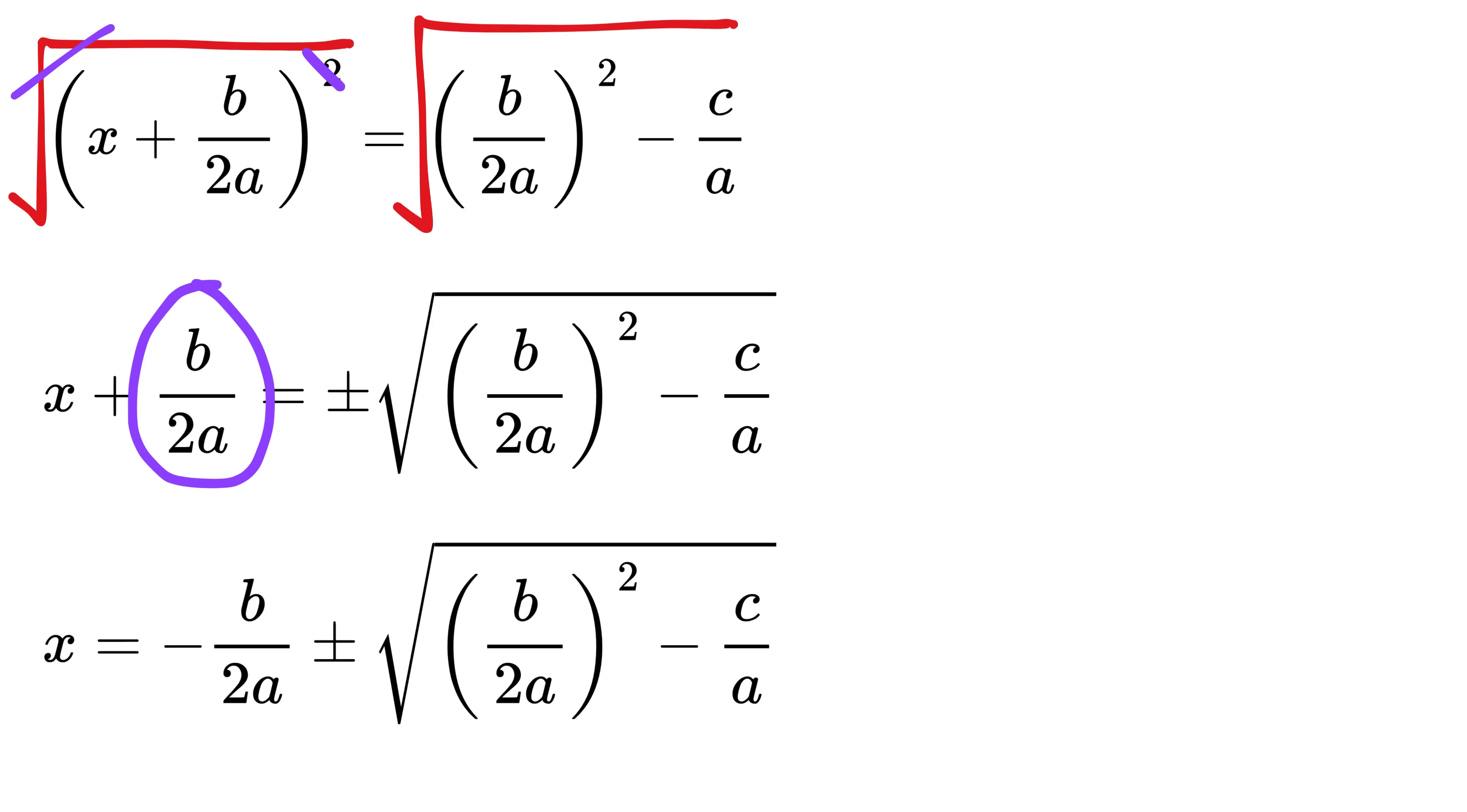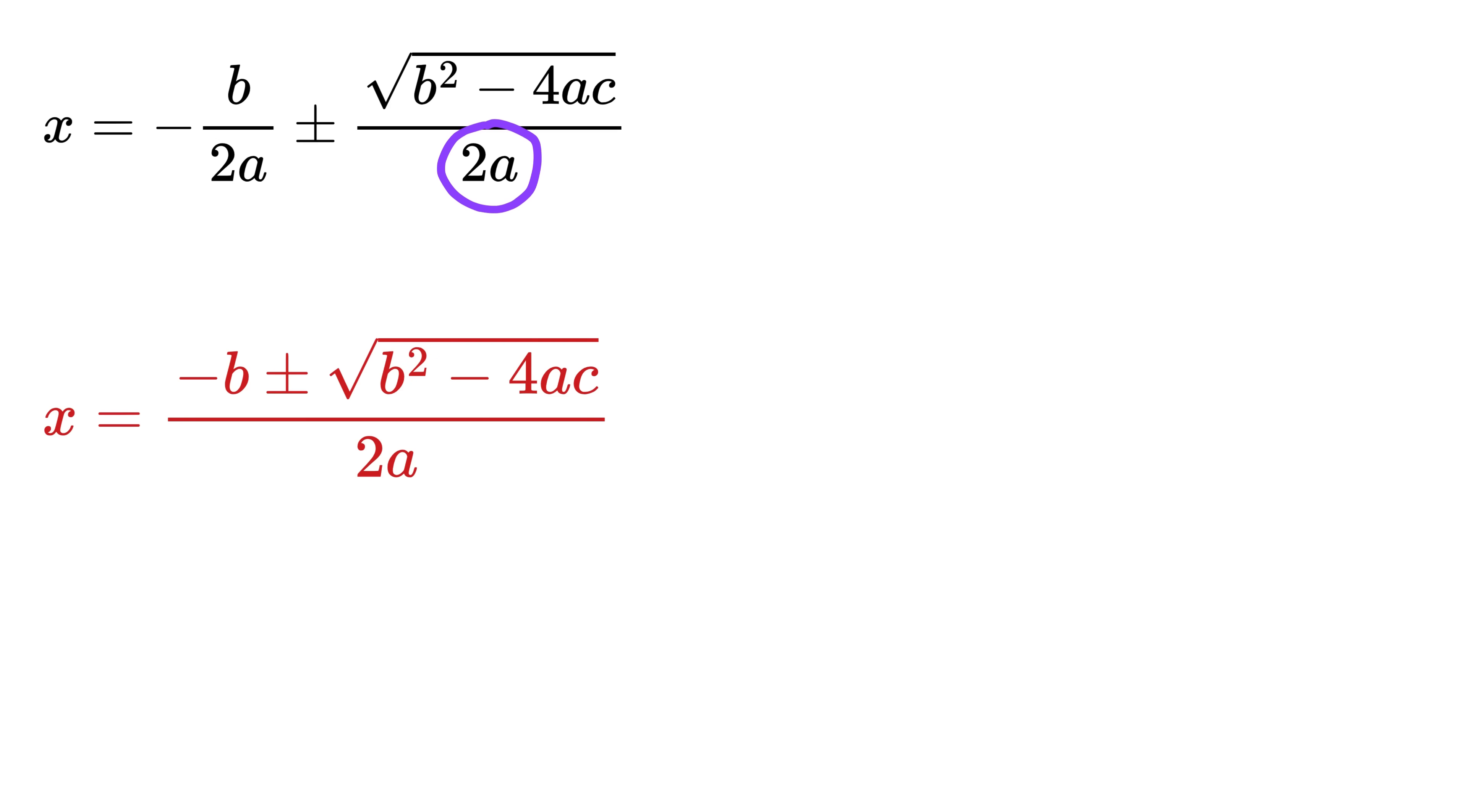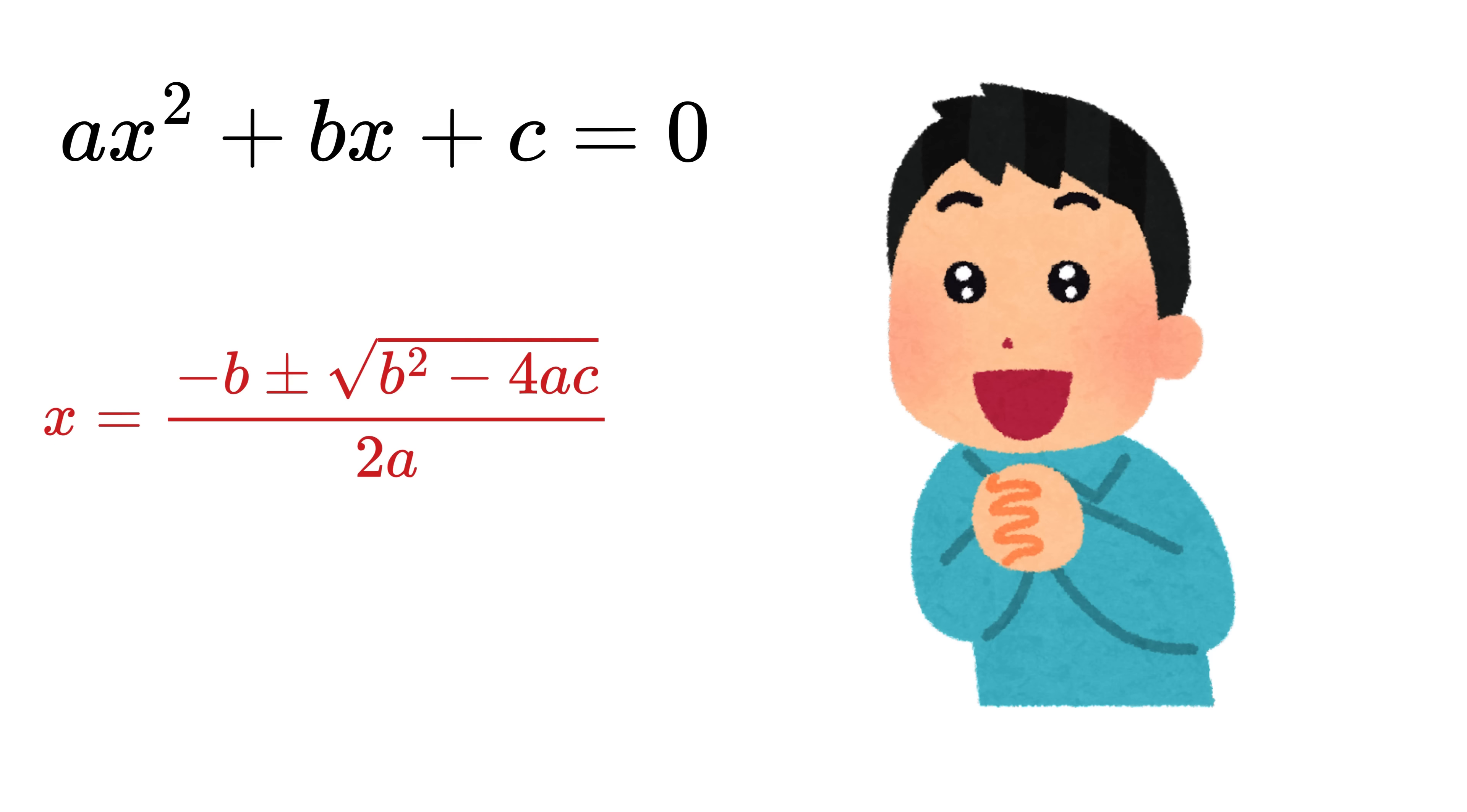Then we subtract b/2a from both sides, multiply and divide by 4a here to get 4ac/4a². The square root of 4a² is 2a, and thus finally this becomes x = (-b ± √(b² - 4ac))/2a. And folks, that is our beloved quadratic formula. Wow, my mind is literally blown away right now.